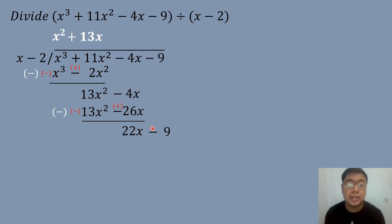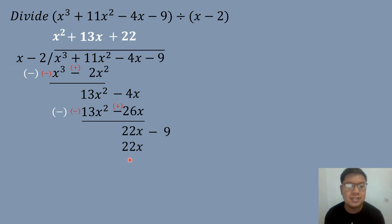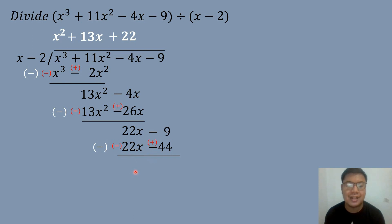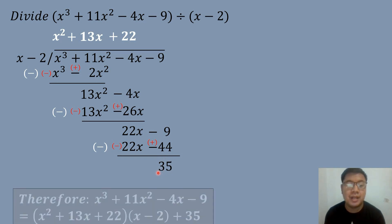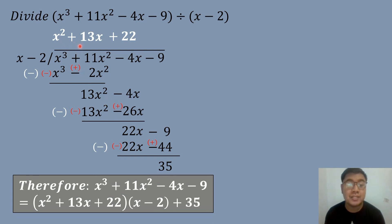Bring down negative 9. Divide 22X by X equals 22. Multiply 22 times X equals 22X. And 22 times negative 2 equals negative 44. Then subtract: 22X minus 22X equals 0, canceled out. Negative times negative is positive, so negative 9 plus 44 equals positive 35. This is the remainder. So the quotient is X squared plus 13X plus 22, remainder 35 over X minus 2.